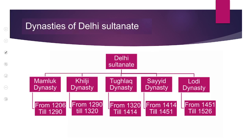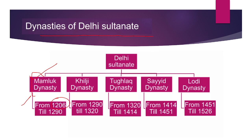Yeh hain dynasties of Delhi Sultanate. Yehaan aap dekh saktay hain: Mamluk dynasty joh hai, isko Slave dynasty bhi kaha jata hai, jisnei 1206 mein aakar baqaida taur pe yehaan apne rule ka aghaz kiya aur Delhi ko apna capital banaya. Uske baad aajati hai Khilji dynasty, jinhon ne 1290 se leke 1320 tak hakumat ki. Tughlaq dynasty jisnei 1320 se leke 1414 tak hakumat ki. Sayyid dynasty jinhon ne 1414 se leke 1451 tak hakumat ki. Phir Lodi dynasty aajati hai, 1451 se leke 1526 tak inhon ne hakumat ki.